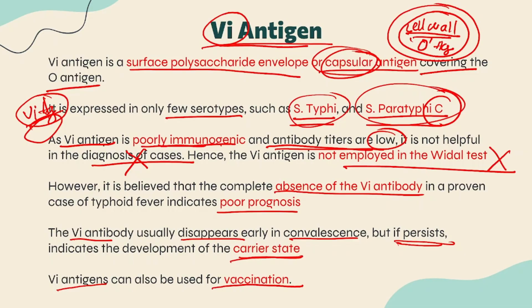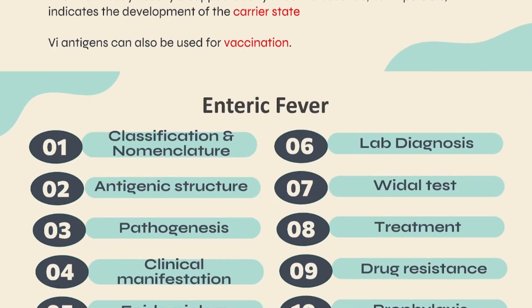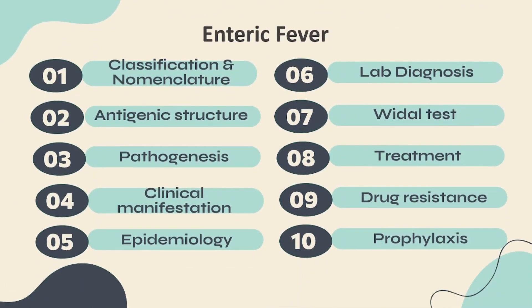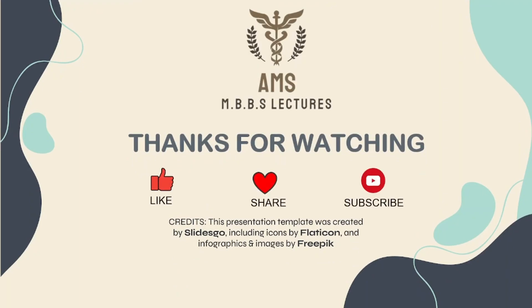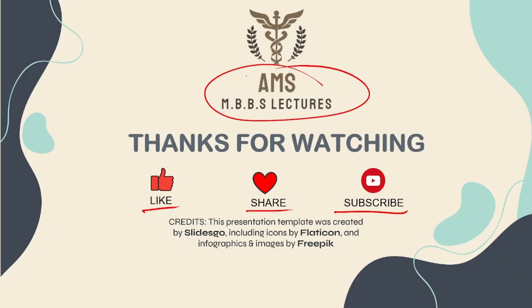This marks the end of the two important topics — the three classification schemes, nomenclature, and the characteristic features of the three antigens. The subsequent topics will be covered in upcoming videos. Thank you so much for watching. If you found this content useful, please like, share, and subscribe to AMS MBBS Lectures, and comment if you have any queries.